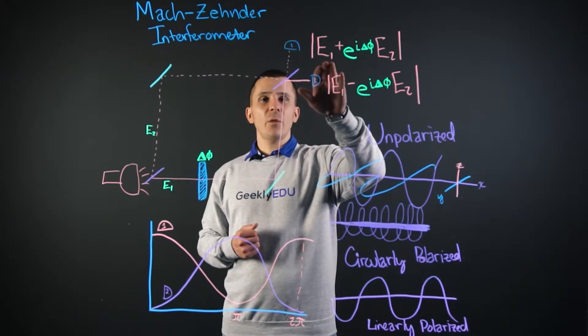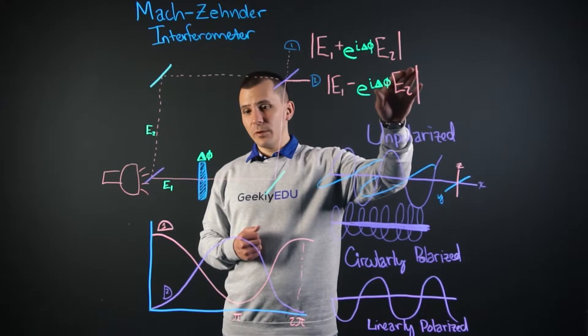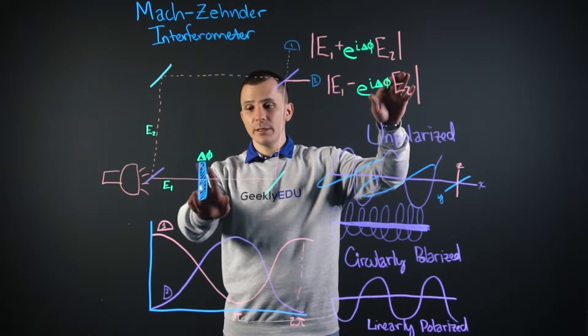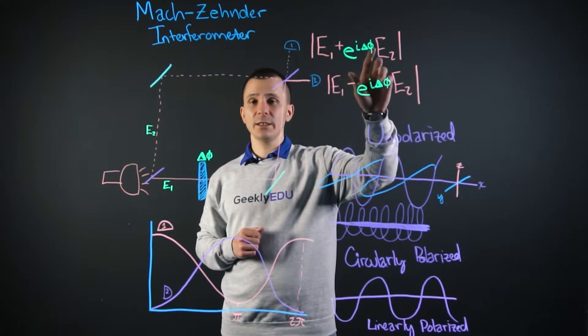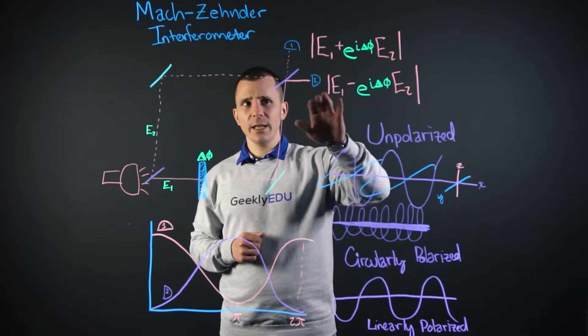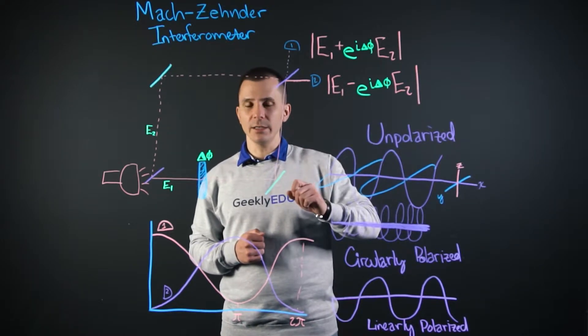If we were to take E1 plus E2 and add in our piece of glass here, e^(i delta phi), the next one for the other detector would need to be a minus, and always keep this in mind.